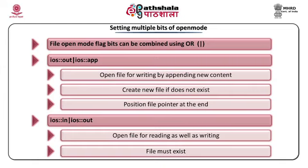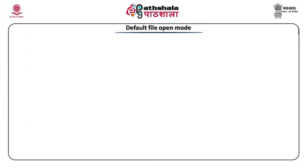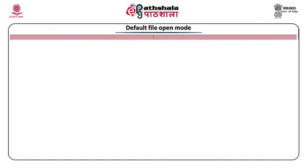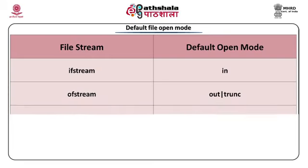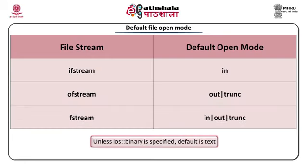Default file open modes: if the object is of ifstream class, the default is ios::in — for reading only. If it is ofstream, the default is ios::out | ios::trunc — the file is used only for output and any existing content is truncated before writing. For fstream, the default is ios::in | ios::out | ios::trunc — used for both input and output and content is truncated. Unless we explicitly specify ios::binary, the file is considered a text file and all operations are text input-output.